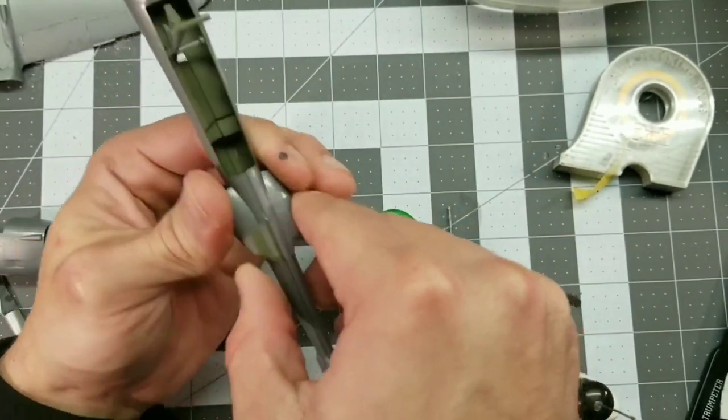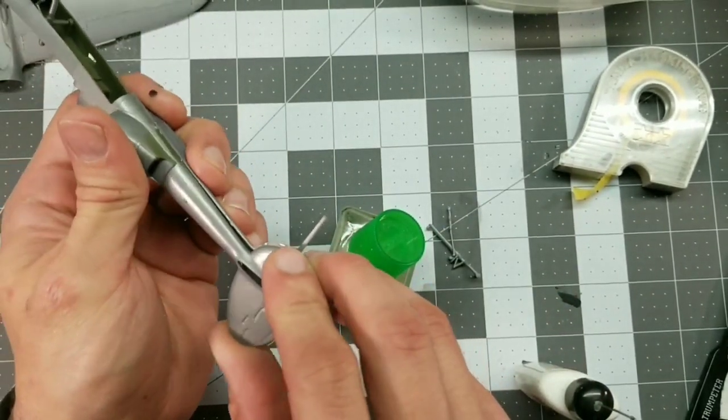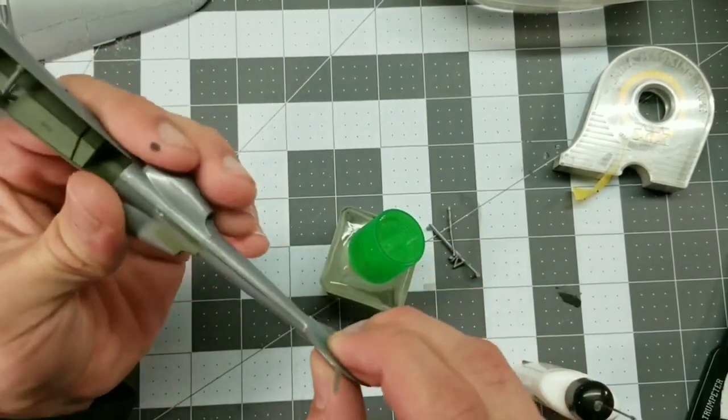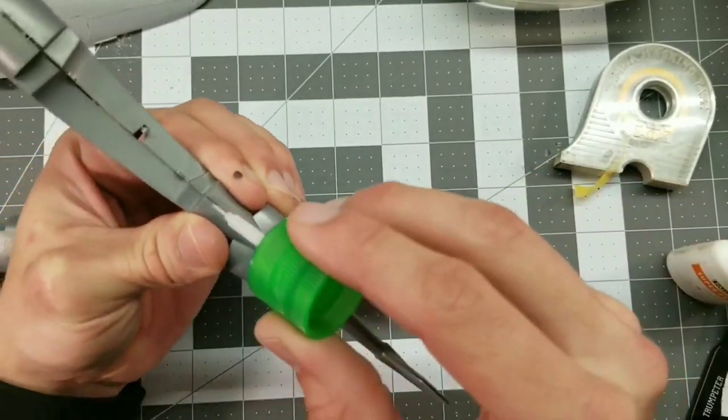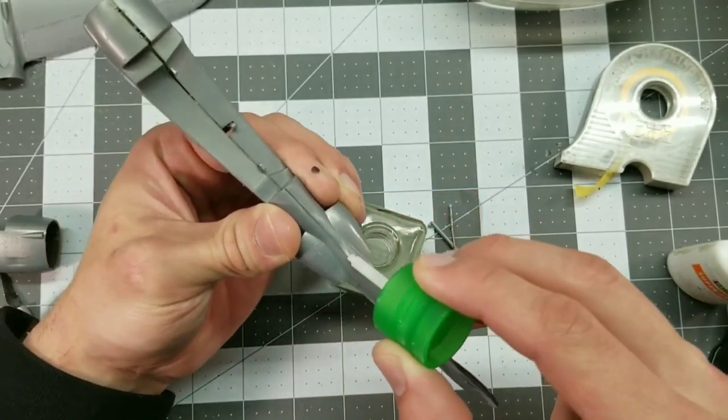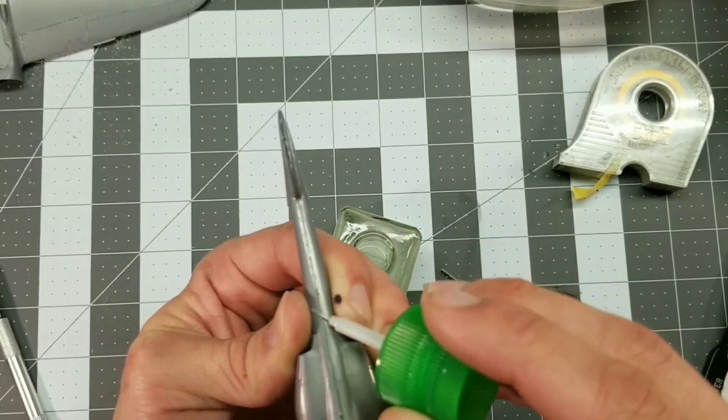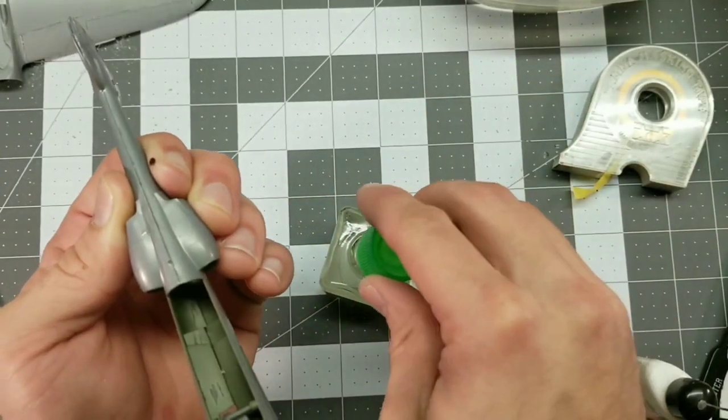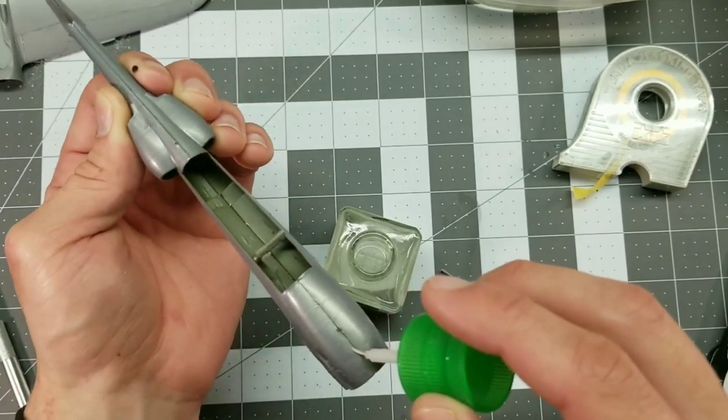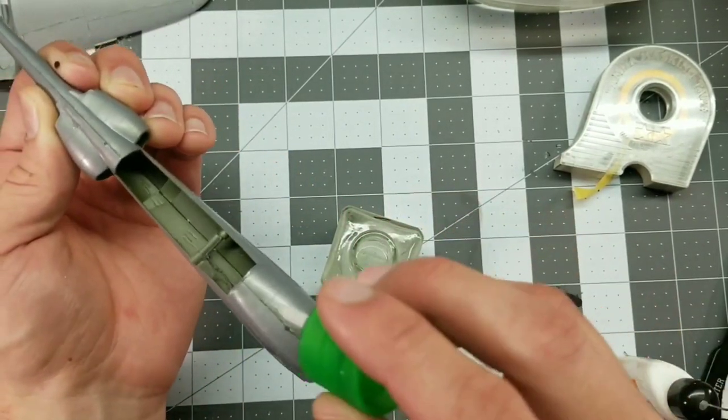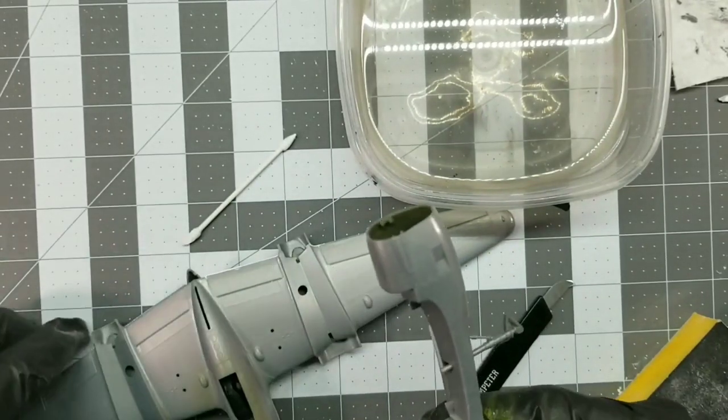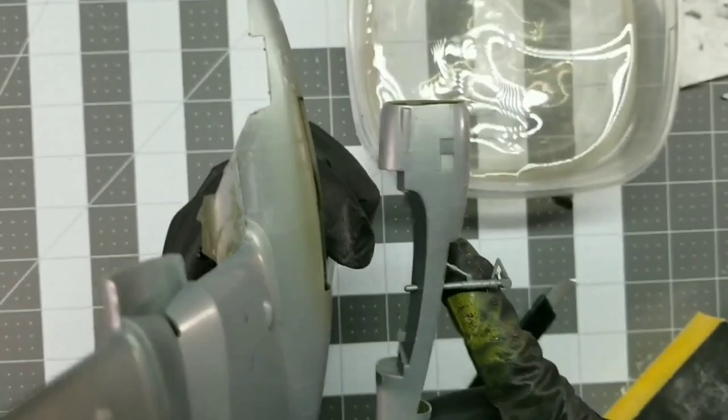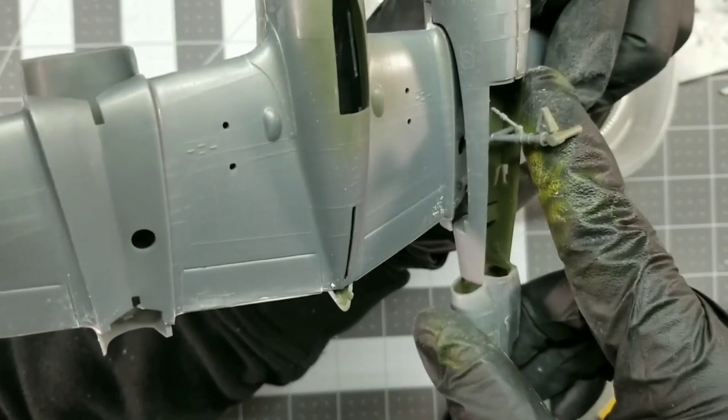So you're going to want to put the landing gear in first obviously, and then put some cement on them after you squeeze them together. So what I do with all my gluing is I put a nice glob in all the holes that connect of stretchy glue. And then I'll do this application of thin cement. And it just slides into place there.